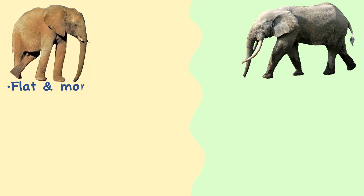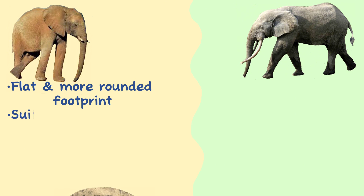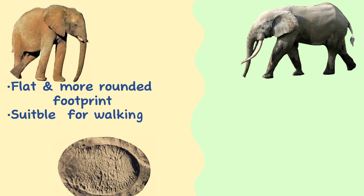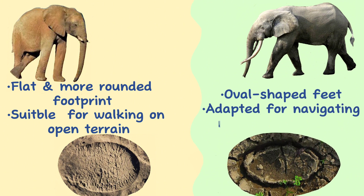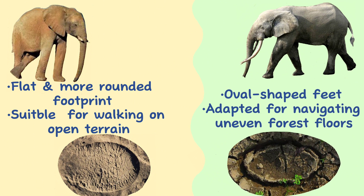Foot shape. African savannah elephants have a flatter, more rounded footprint, which is better suited for walking on open terrain. The African forest elephant has more oval-shaped feet, adapted for navigating uneven forest floors.